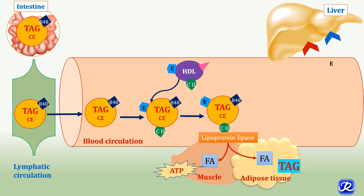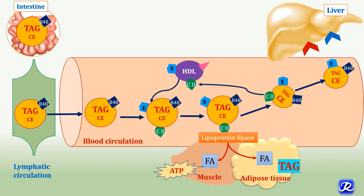The hydrolysis of triacylglycerol results in a decrease in size of the chylomicron, leading to formation of chylomicron remnants. These remnants are enriched in cholesterol esters, and the ApoA and ApoC on their surface are transferred back to HDL. The chylomicron remnant now has only ApoE and ApoB48. The transfer of ApoC2 to HDL decreases the ability of lipoprotein lipase to further break down triglycerides, and these remnants are cleared from circulation by the liver.